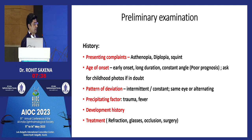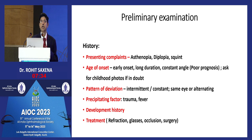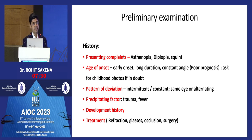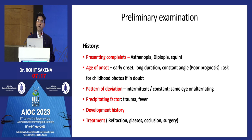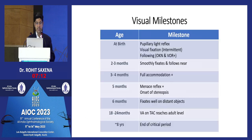Developmental history is very important because many conditions coexist in children with strabismus and can get missed. Parents notice the strabismus but may not notice the developmental delay, especially with an only child who has no milestone comparison. It's important to ask about perinatal insult and any associated developmental issues.